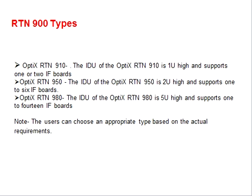According to the version, we have different types of RTN. The RTN 900 series started rollout from 910, 950, and 980, and now we have more variety including 950A, 980L, and 9051C.